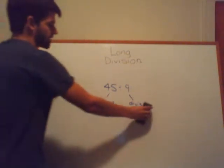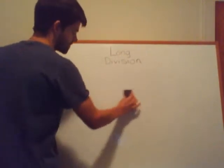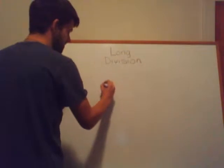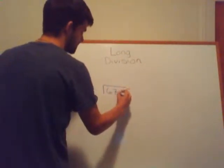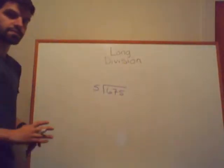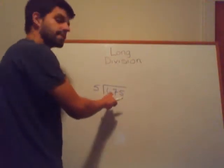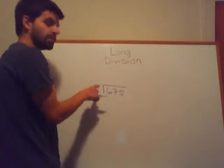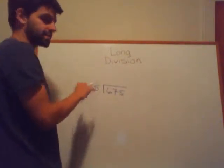Keeping that in mind, let's look at our first practice problem: 675 divided by 5. Just to recap, 675 is our dividend — it's the number being divided. And 5, the number that 675 is divided by, is our divisor.